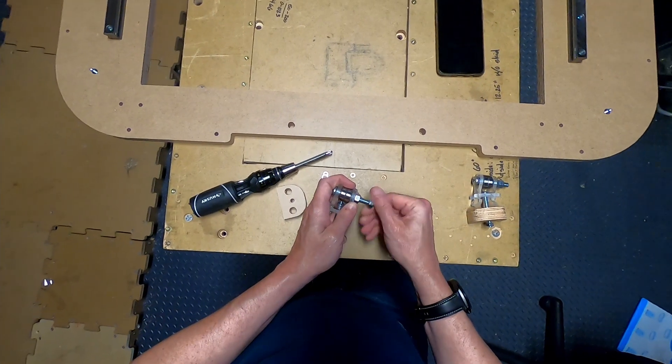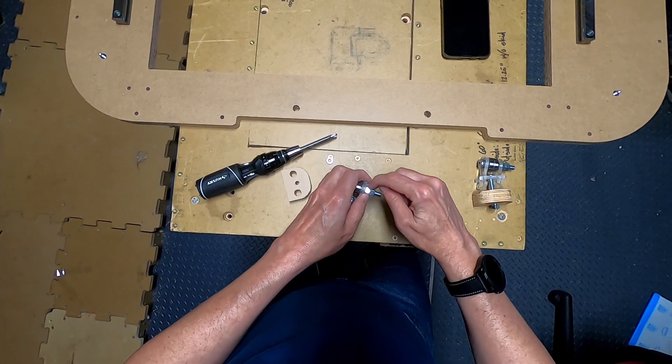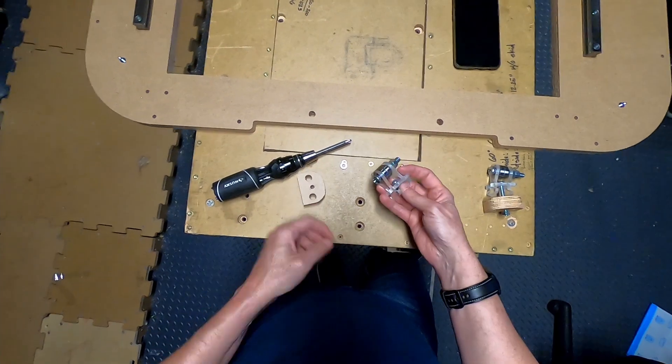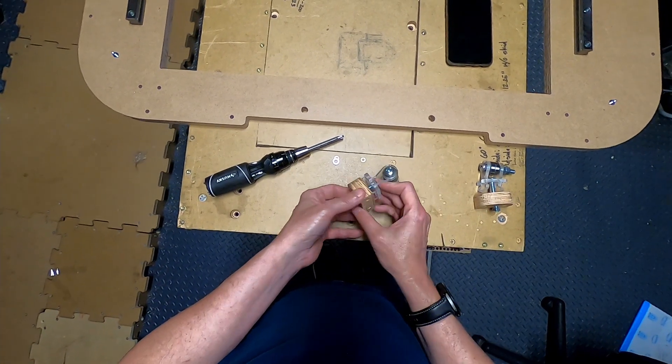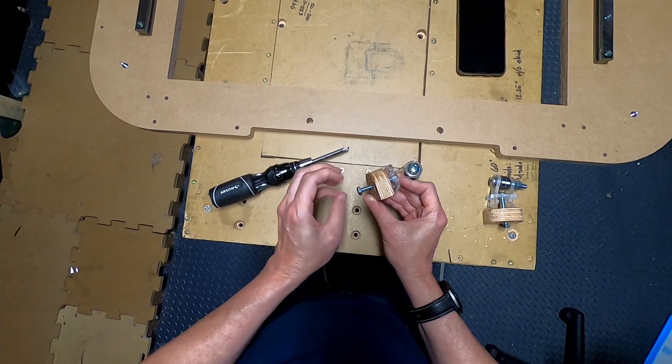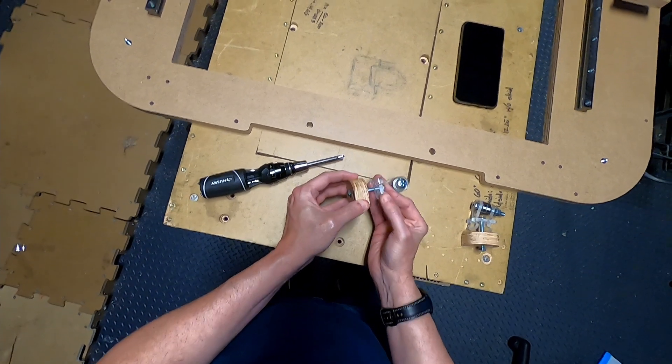The reason why we have two nuts is for a jam nut situation. So you're tightening this nut onto this nut so you can still have some wiggle area. Now this is done. You can go ahead and put the quarter inch screw in and only thread the nut on a couple threads, so you still have quite a bit of room here. You're going to use this as a tensioner.